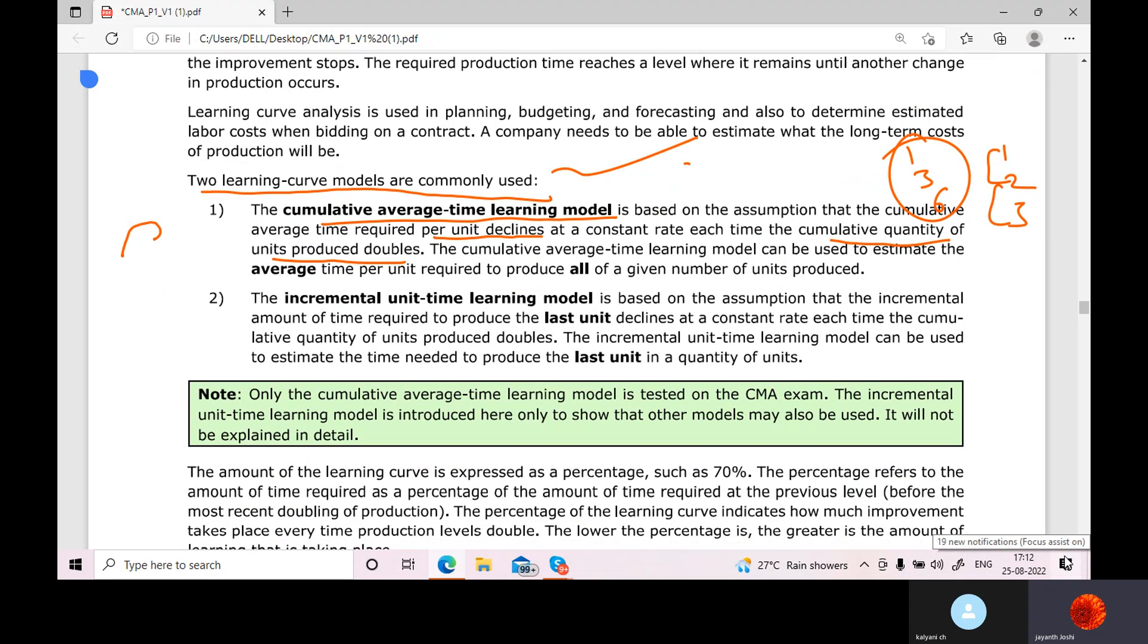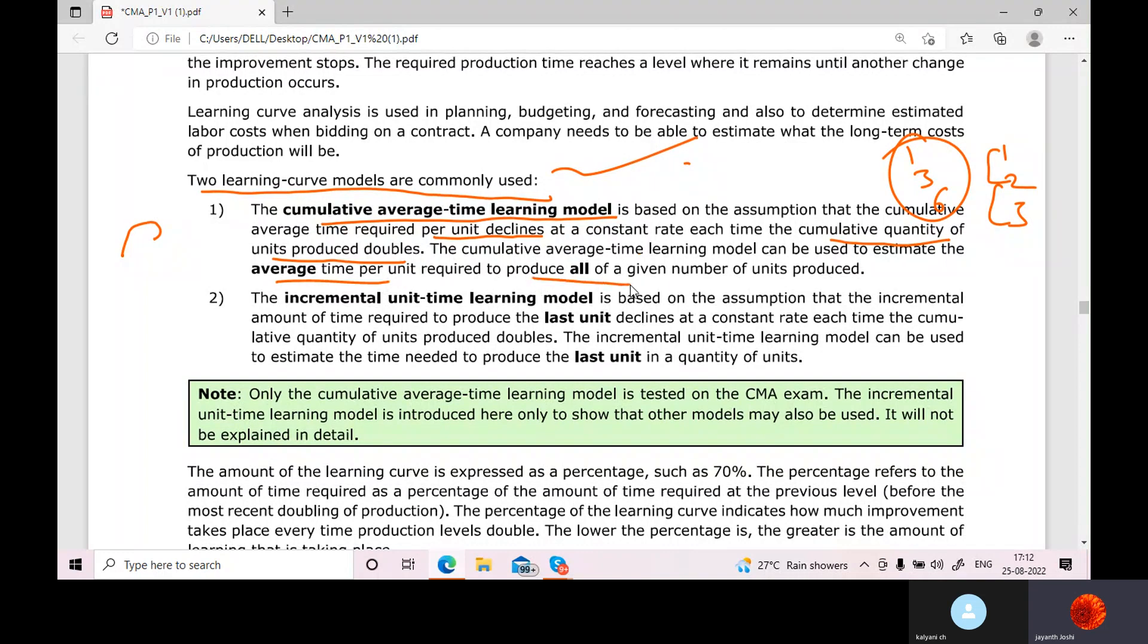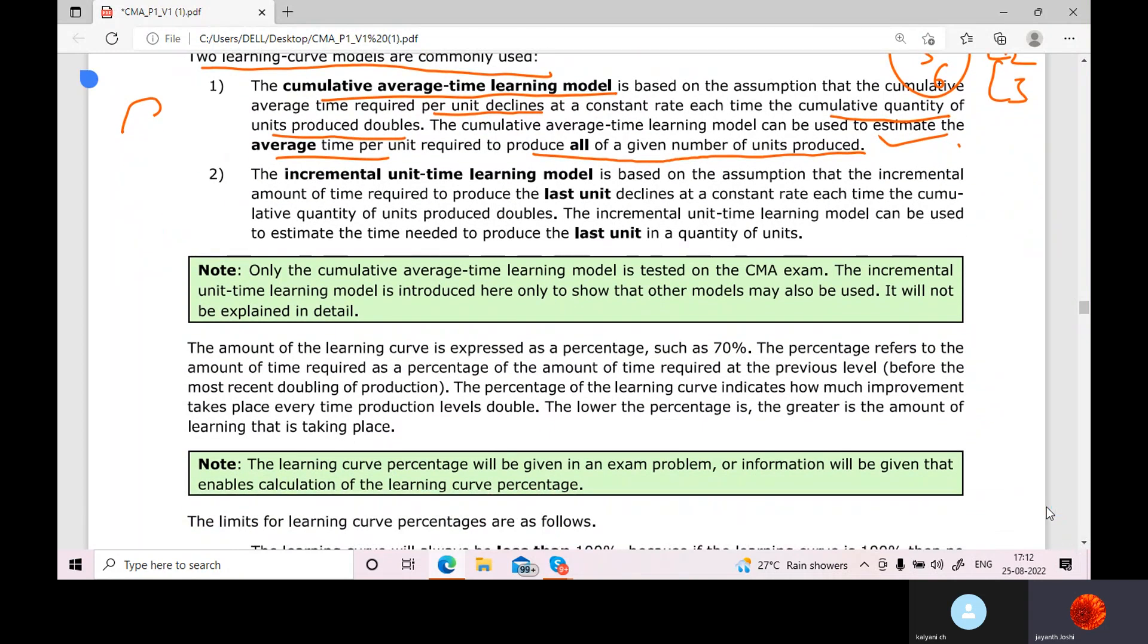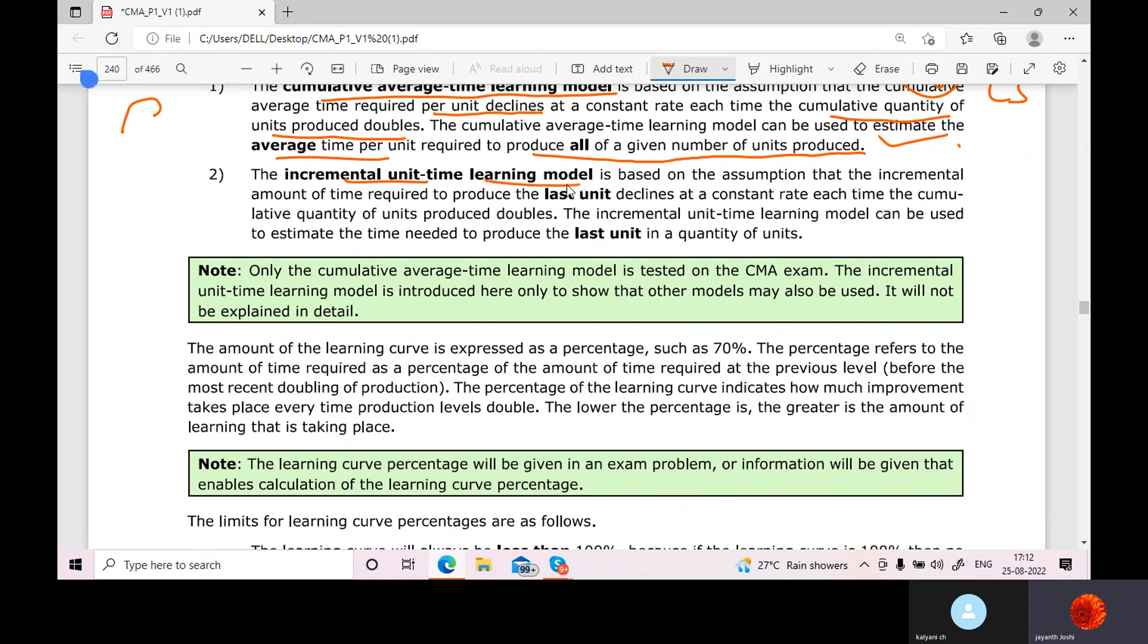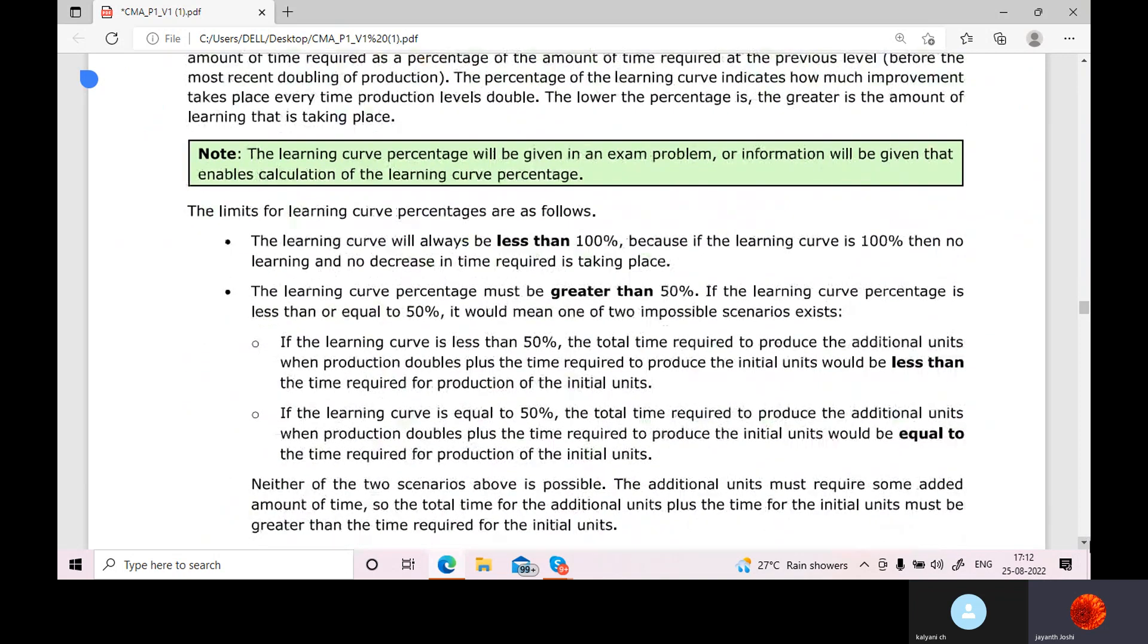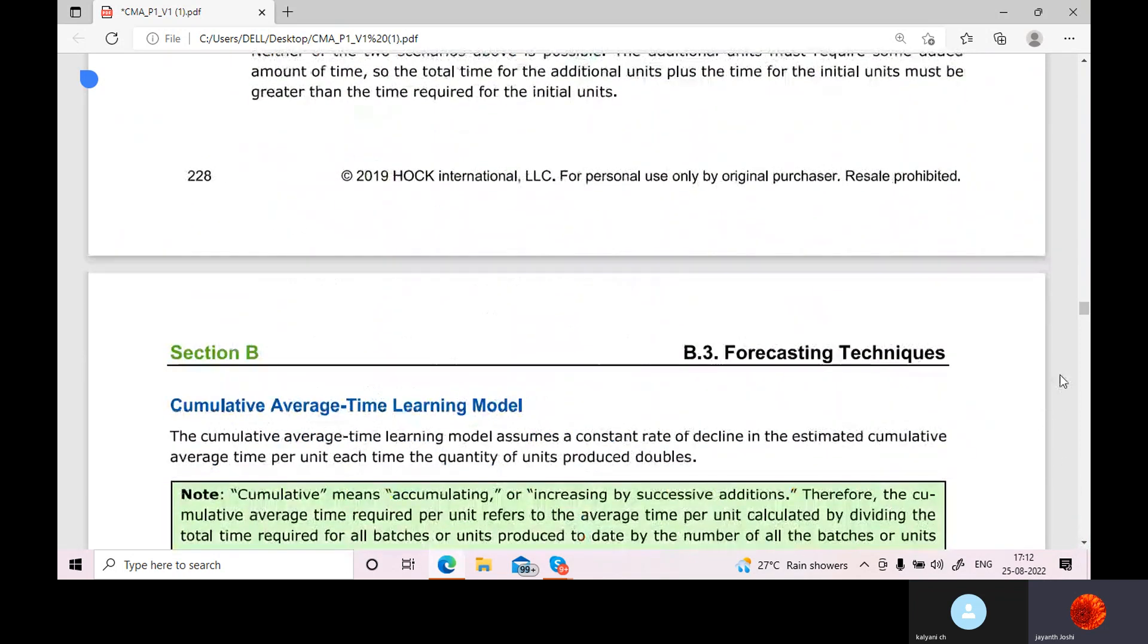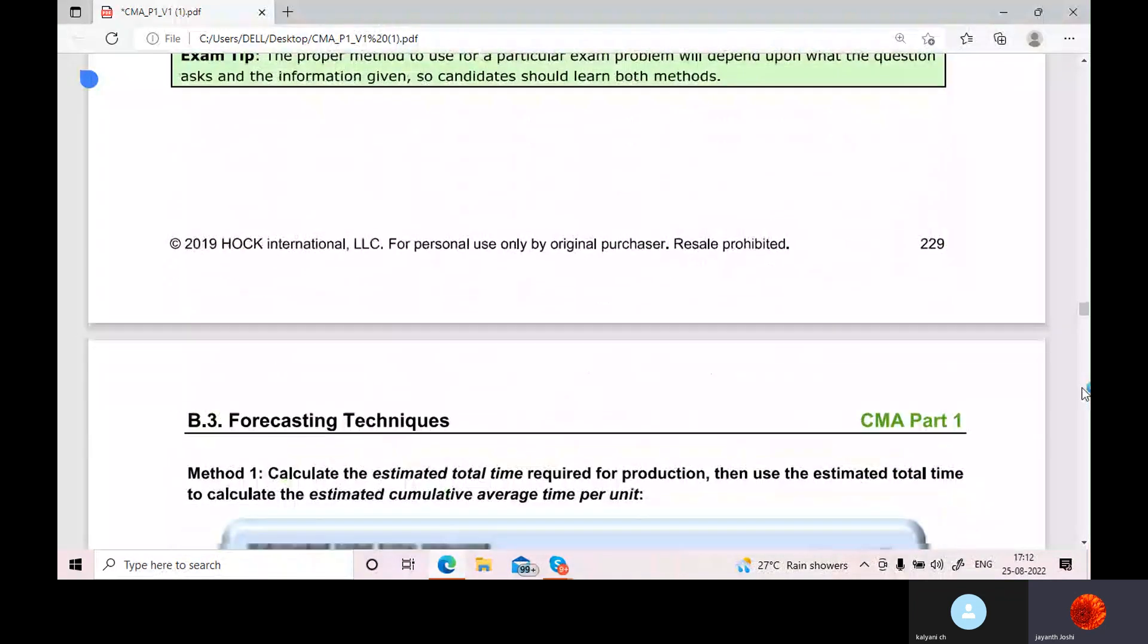Are you following madam? Yes sir. The cumulative average time learning model can be used to estimate the average time per unit required to produce all of given number of units produced. Now, incremental unit time learning model is based on assumption that incremental amount of time required to produce last unit declines. As you move forward, the last unit what you make, you will be consuming the least time to make that unit. That is the incremental unit time learning model.